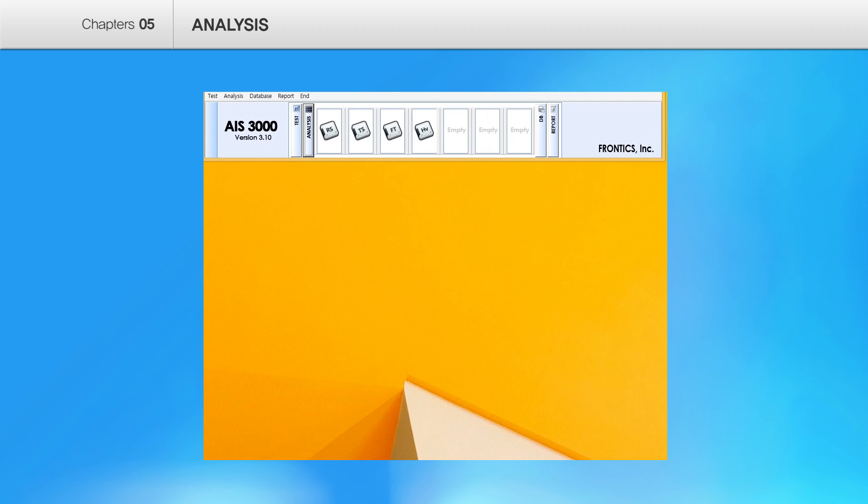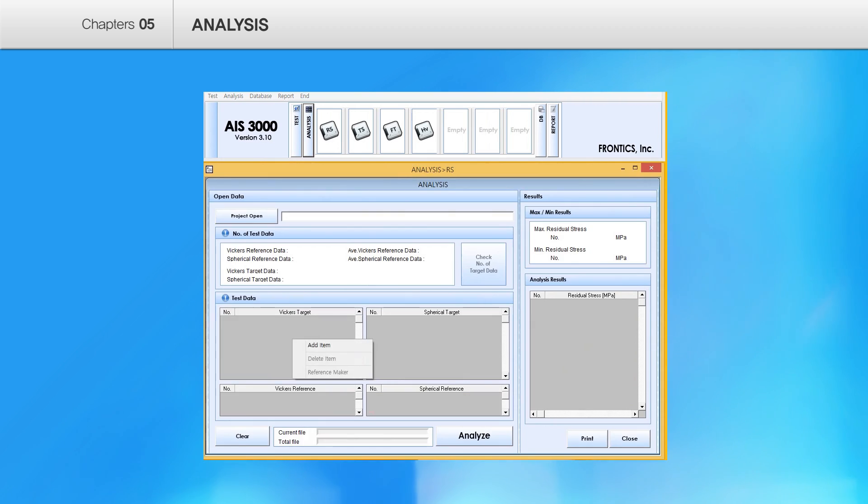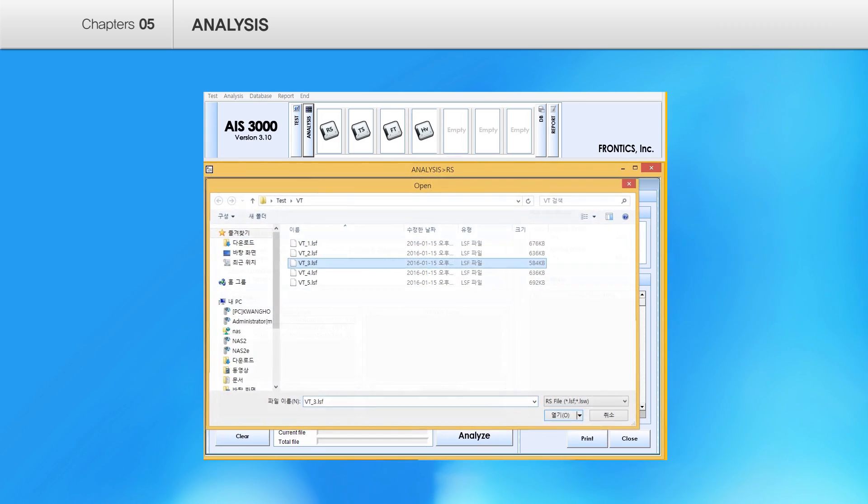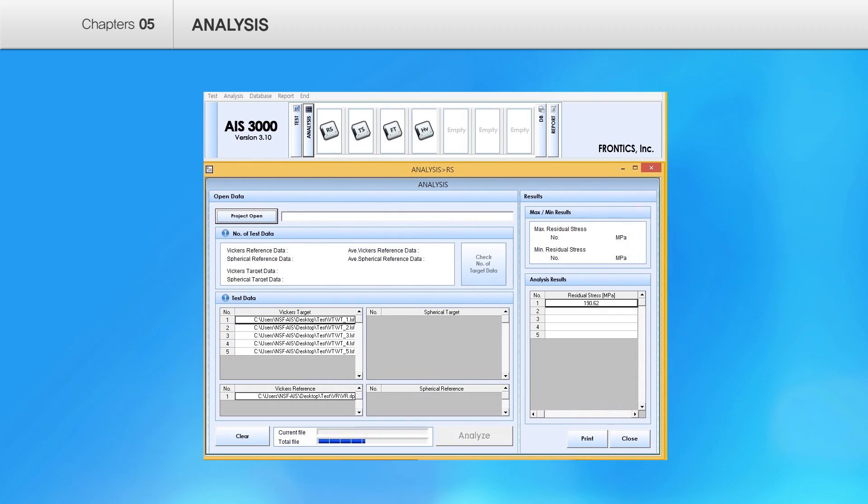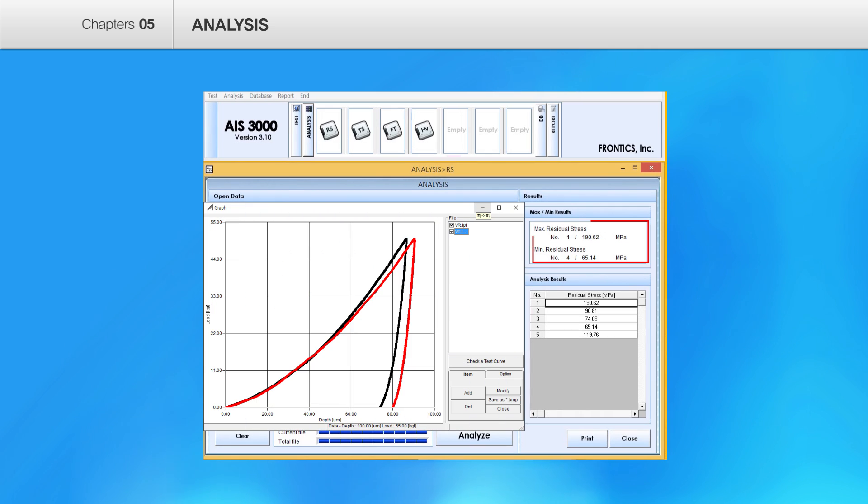When it completed both reference test and target test, you can check these two indentation load depth curves on the screen. You can analyze values with specialized software program. The values will be described in megapascal unit. The plus refers to the tensile residual stress, and minus means the compressive residual stress.